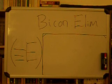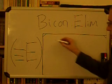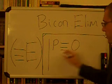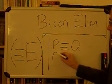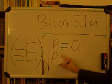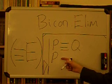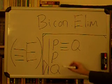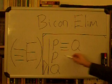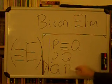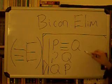Next is the biconditional elimination. This one's a pretty easy one. You have P if and only if Q, and you also have P — or you could have Q. Whichever you have on that line, you get the other one out. If you have P, you can get Q by eliminating it. If you have Q, then you get P by eliminating Q. So whichever it is, the elimination is just a one-step process.